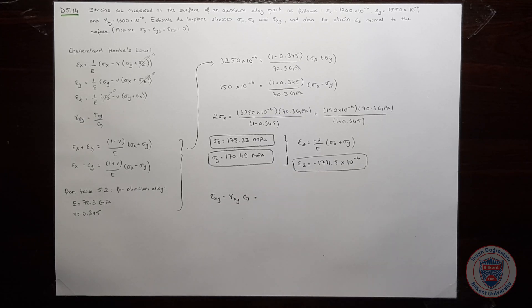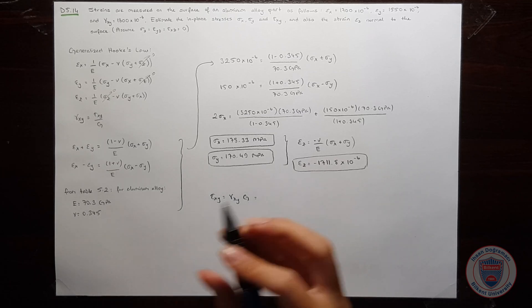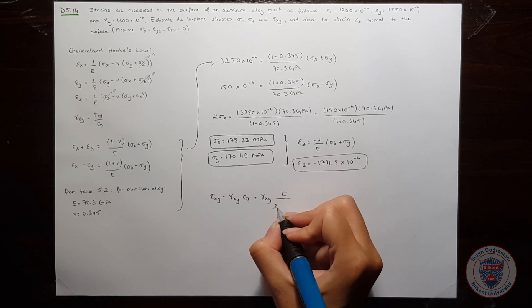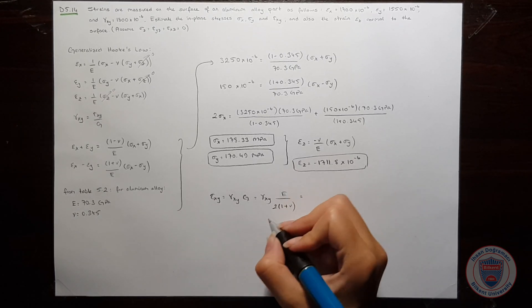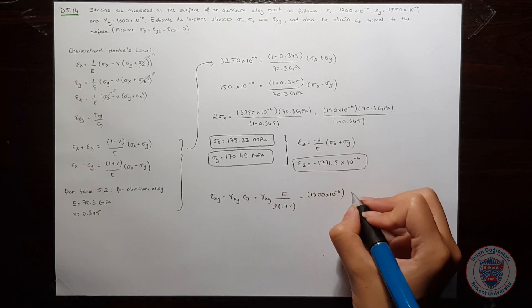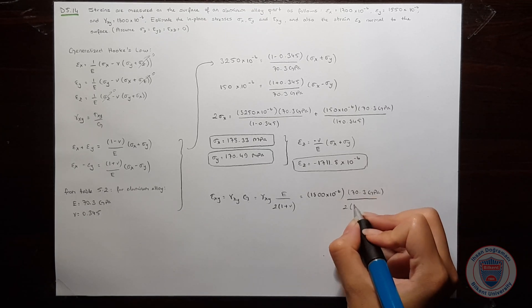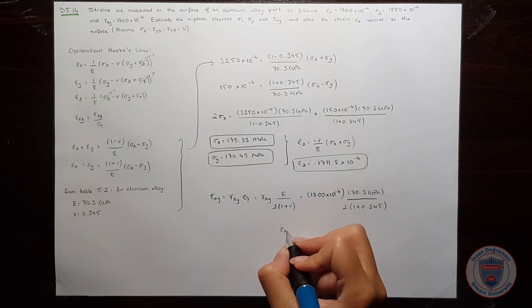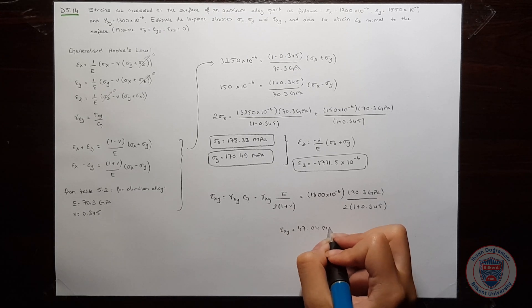We don't have the value for g but we can easily compute g using Young's modulus and Poisson's ratio. We know that g is equal to e over 2 times 1 plus Poisson's ratio. Again, I am substituting the values and we get tau xy is equal to 47.04 MPa.